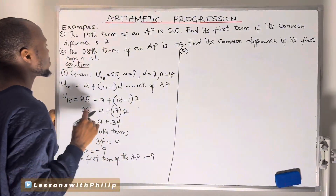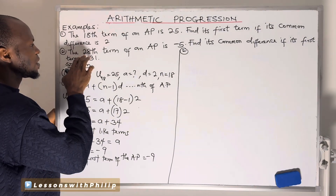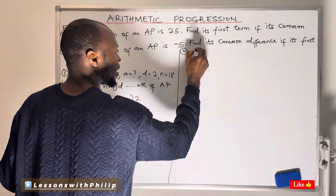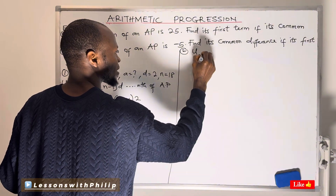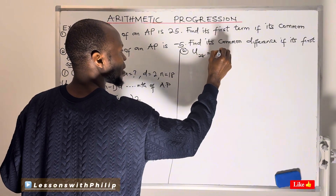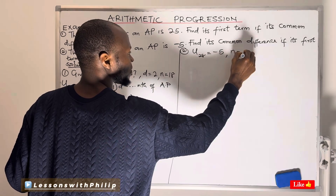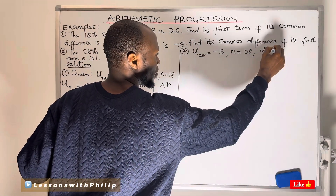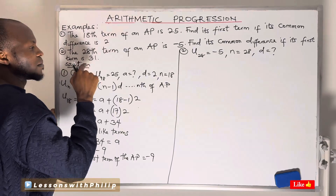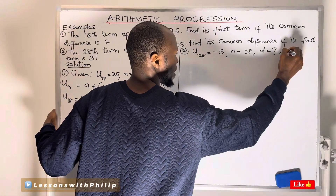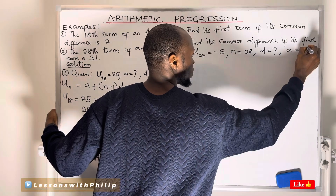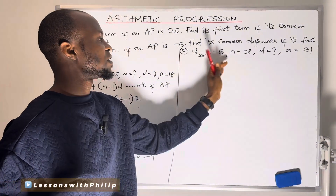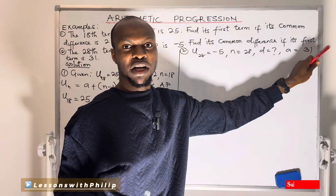Question two: we are given the 28th term of an AP to be −5. Automatically the number of terms n is 28. I'm asked to find the common difference, given that the first term a is 31. I've written what I'm given from the question and interpreted it to bring out the details I need.